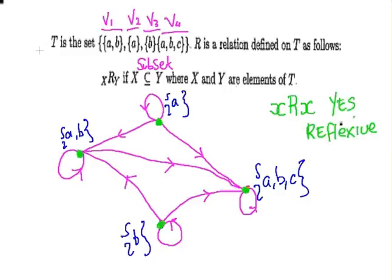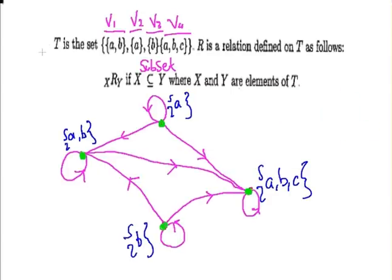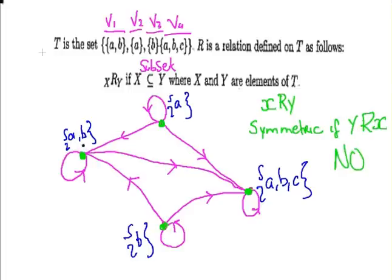Now the next question is, is it symmetric? If it is symmetric, we would have xRy and yRx. Let's consider what this means. If X is a subset of Y, it is symmetric if Y is a subset of X. Now in that case, that does not hold. For example, A is a subset of AB,